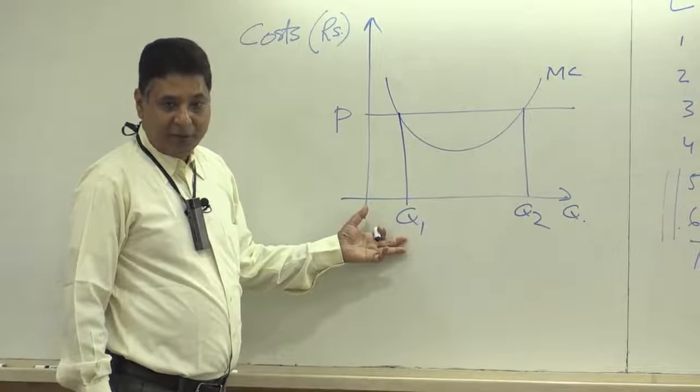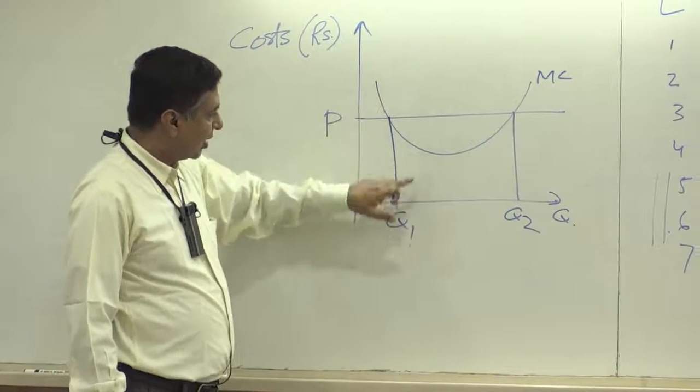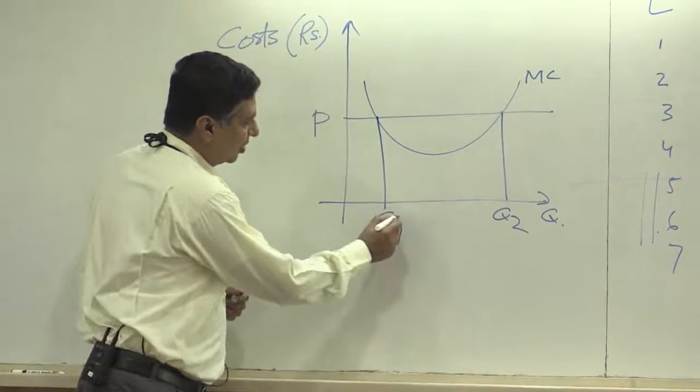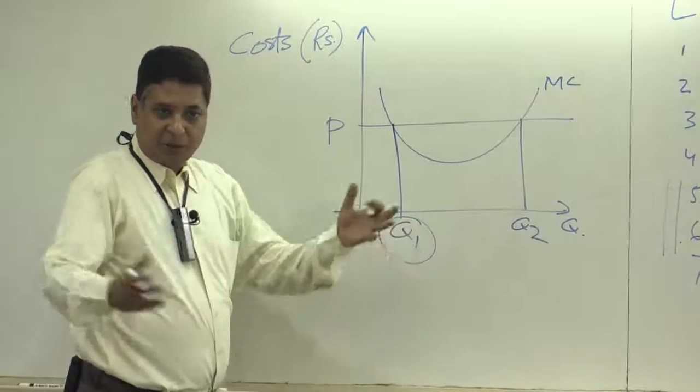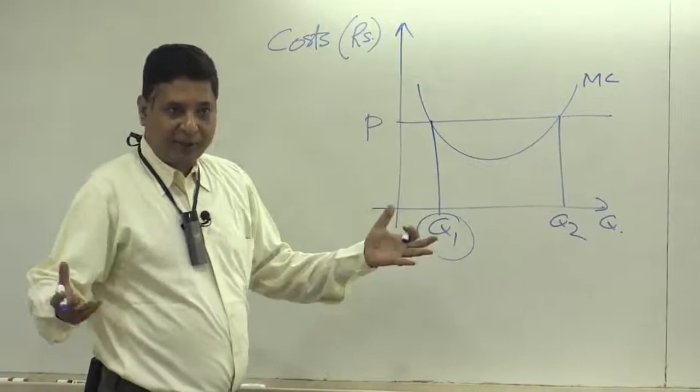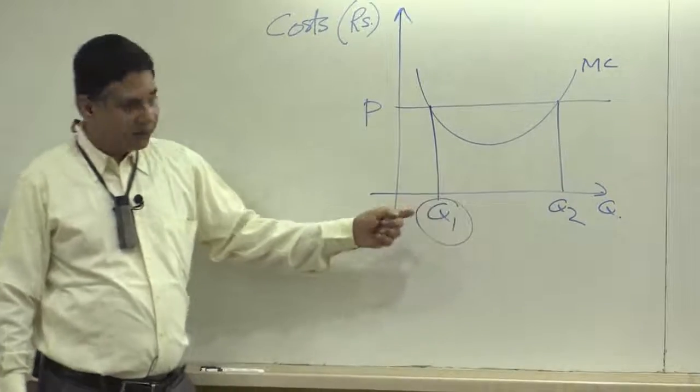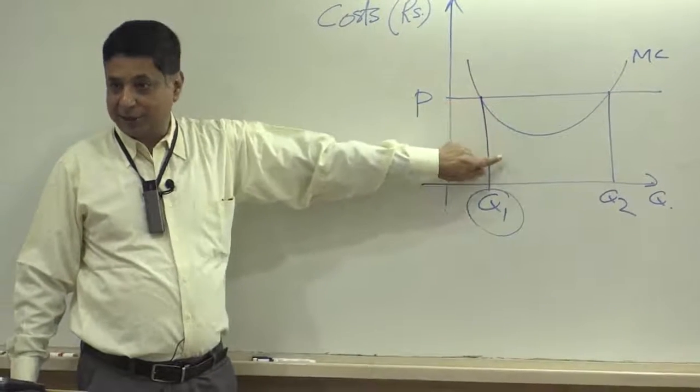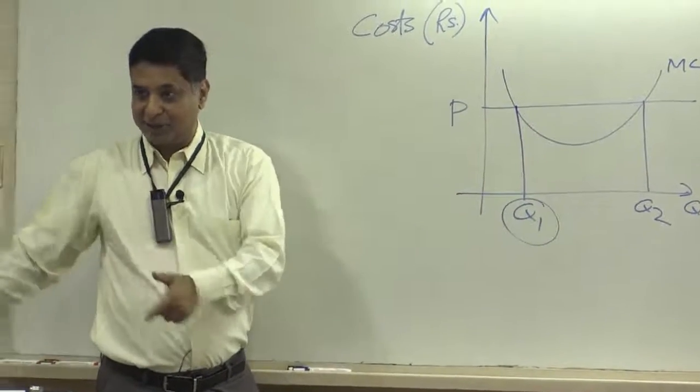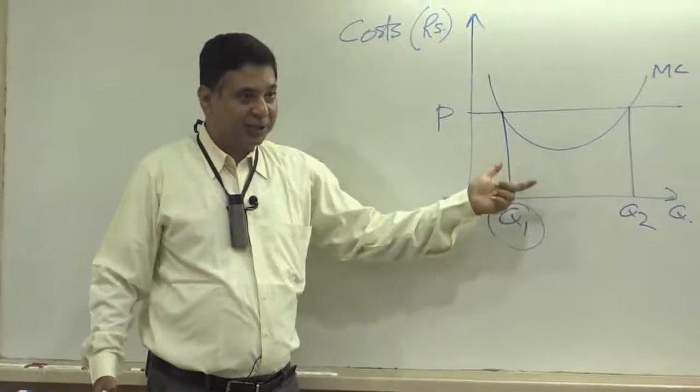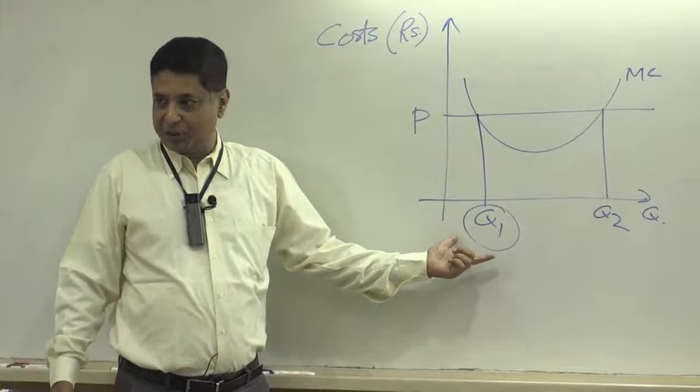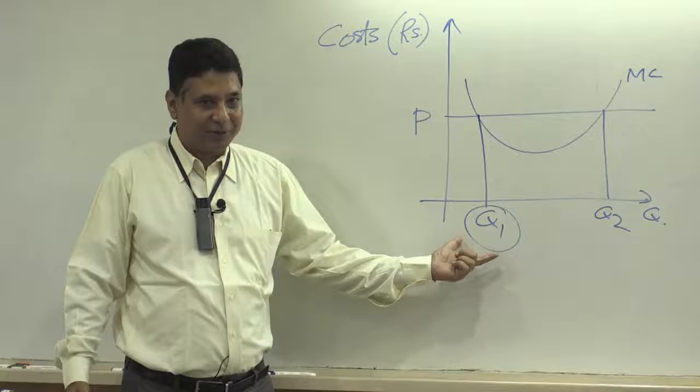You will be minimizing profits because suppose this was the maximum, then you should get the highest profit. Let's suppose if you produce a little bit more, what would happen? The price would be higher than the marginal cost. Marginal costs are coming down, so you will make more money. So it can't be a maximum. It's actually the worst position to be in. It's the minimum profit.